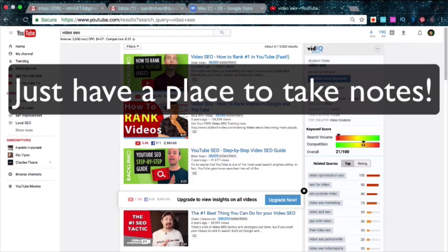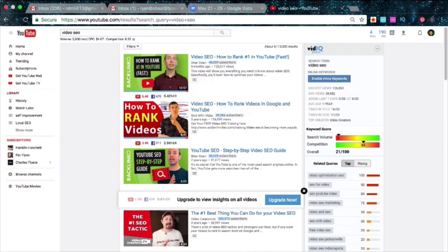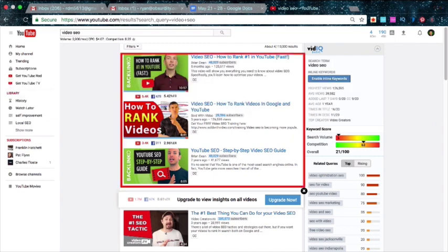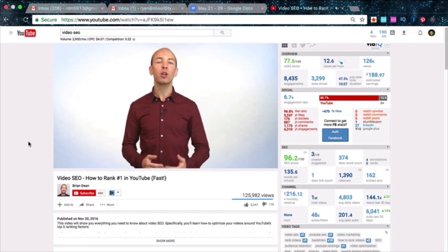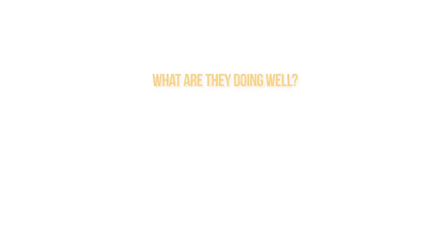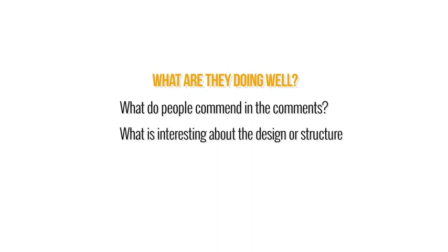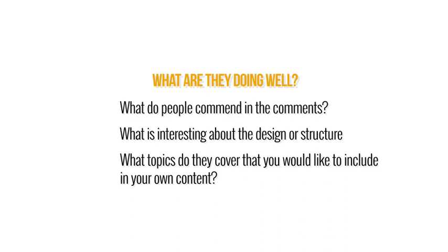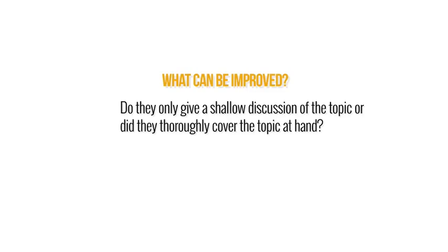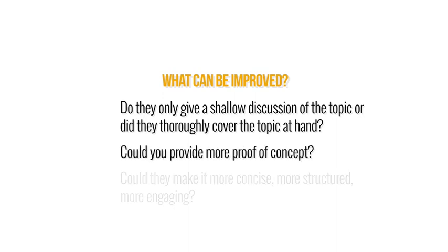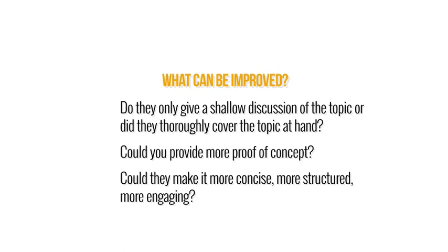Create a spreadsheet for each content bucket and label it 'content curation — your keyword.' Start by watching your competition's top two to three videos. Take notes on the following: what are they doing well? What do people commend in the comments? What is interesting about the design or structure? What topics do they cover that you'd like to include in your own content? Add all of these to your spreadsheet. What can be improved — do they only give a shallow discussion of the topic or do they thoroughly cover it? Could you provide more proof of concept, make it more concise, more structured, more engaging? Look in the comments section for viewer questions, as these may be topics not addressed in the video.